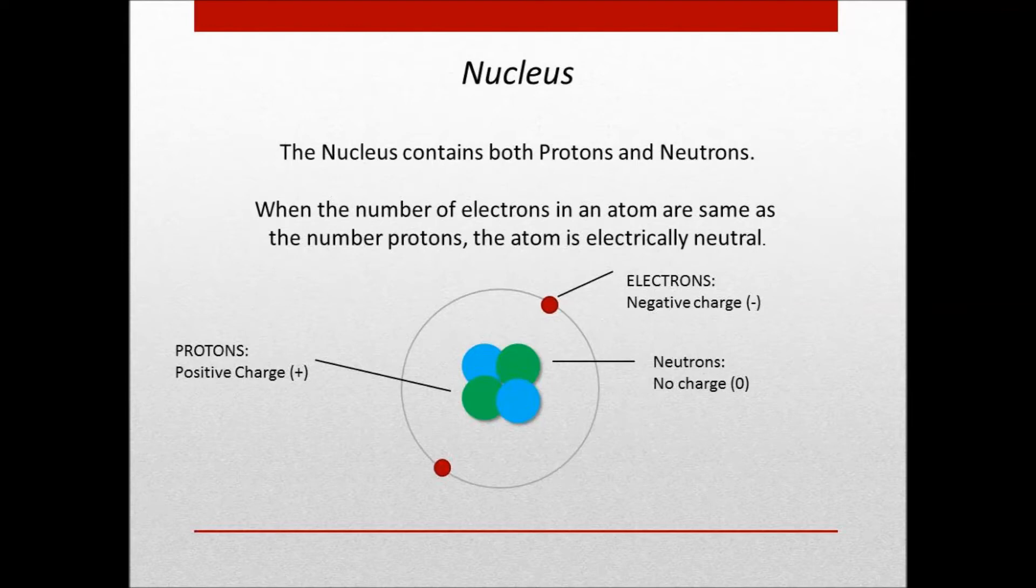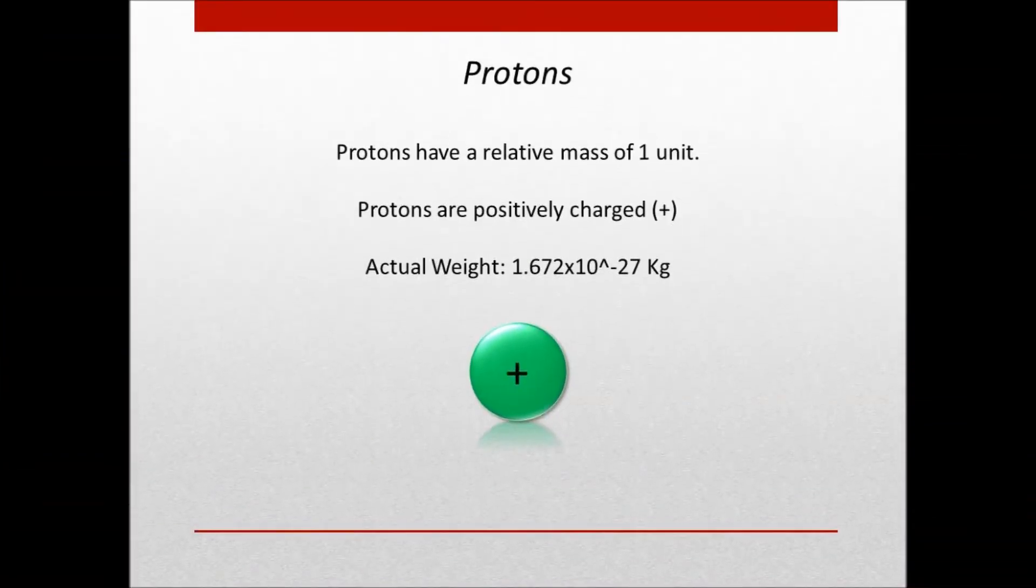The nucleus contains both protons and neutrons. A proton has a relative mass of one unit and is positively charged. A proton has an actual weight of 1.672 x 10 to the negative 27 kilograms.